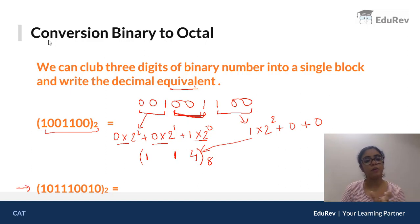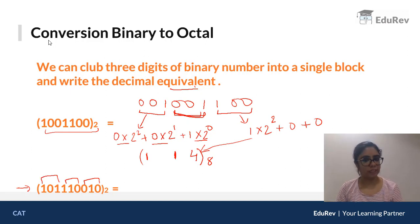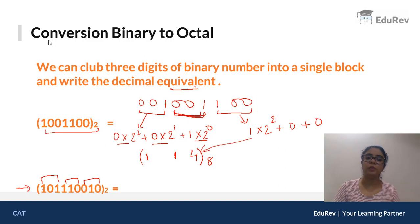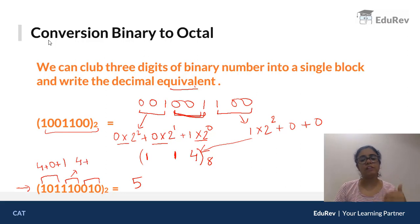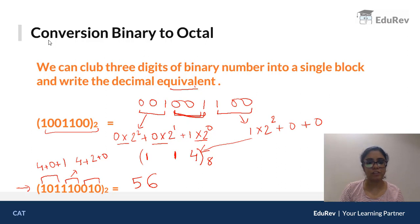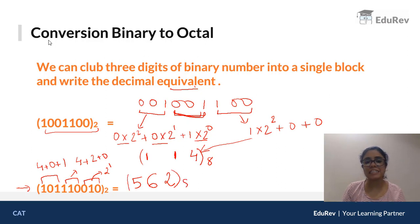Let's take one more example, forming blocks of 3 again. First block: 1×2²=4, second digit 0, third digit 1×2⁰=1, total = 5. Second block: 1×2²=4, 1×2¹=2, third is 0, total = 6. Third block: first is 0, second 1×2¹=2, third is 0, total = 2. So the answer is 562 to base 8. That's how you convert binary to octal.